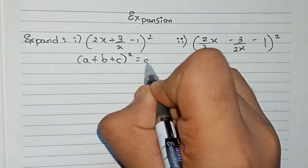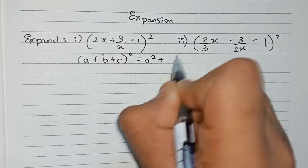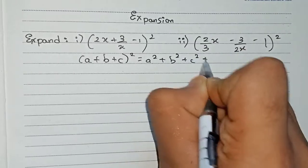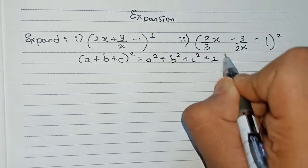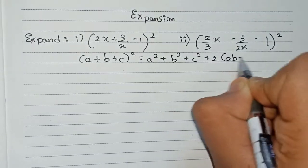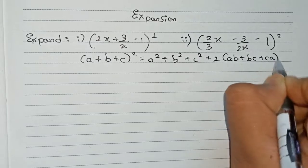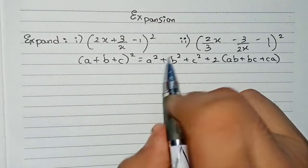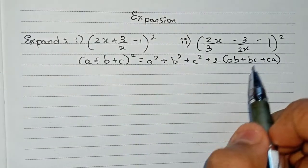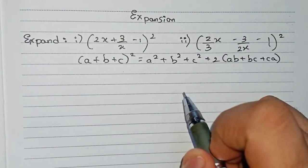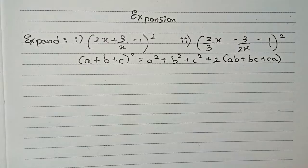The identity expands as: a² + b² + c² + 2ab + 2bc + 2ca. I have made a complete video on the standard formulas of expansion — a link will be in the description, you can check it.